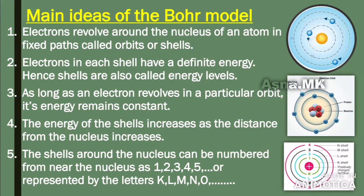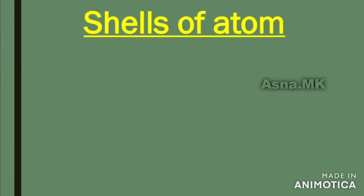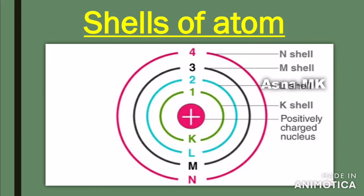We have five shells. The first shell is K, the second shell is L, the third shell is M, and the fourth shell is N. These are represented using English capital letters.